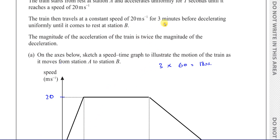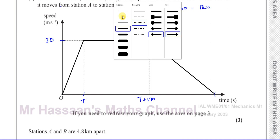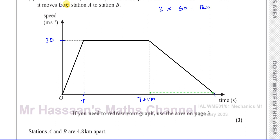What this means is the time it took to accelerate is half the time it took to decelerate, because it takes twice as long to come to rest. If the gradient of the acceleration phase is twice as steep as the deceleration phase, then the deceleration phase must last twice as long — so from the end of constant speed to rest must be 2T. That makes the total time 3T plus 180.